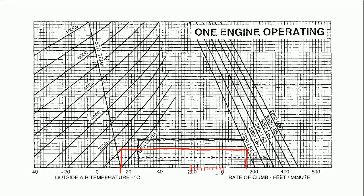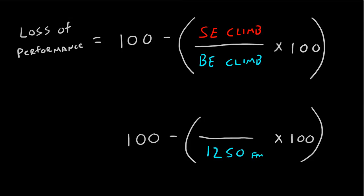Alright, so we've got 10 increments between 0 and 200, which means each increment is 20. So, 0, 20, 40, 60, 80, 100, 120, 140, looks like about 150. So it looks like about 150 feet per minute rate of climb on a single engine. So, here we go, single engine climb is 150 feet per minute.